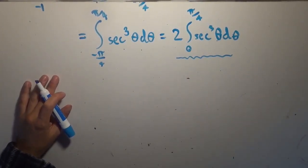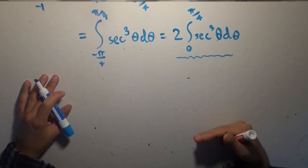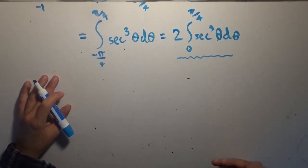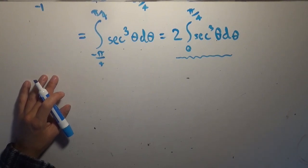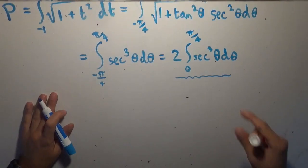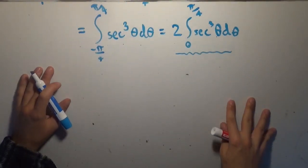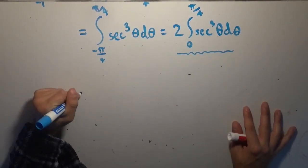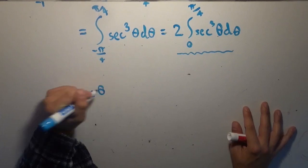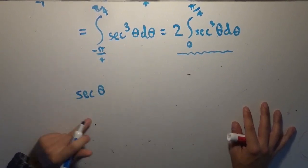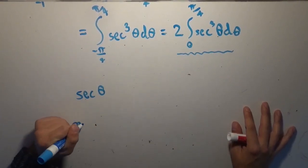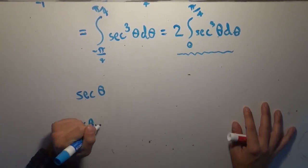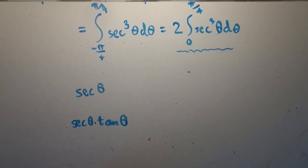We want to take the derivative of one of those and integrate the other, and it makes the most sense to take the derivative of the secant function and integrate secant squared, because the integral of secant squared is tangent. So the anti-derivative of secant squared is tangent. We're going to take the derivative of secant of theta, which is secant theta times tangent theta — an easy-to-remember fact from Calc 1.